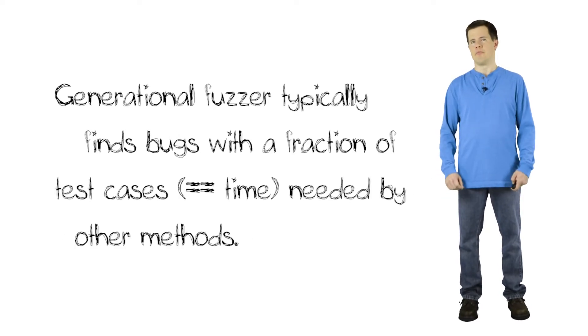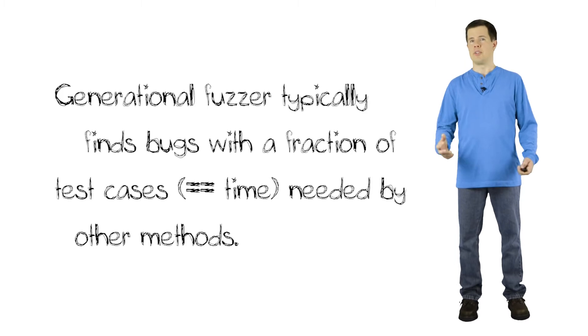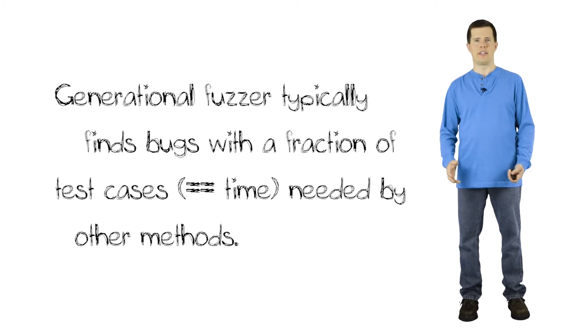So graphically, the fuzzer knows the protocol, so it can create a whole bunch of test cases for the first field in the first message, and the second field in the first message, and it can just iterate through the model of the protocol that it has, creating test cases for each field of each message, which allows it to get really good coverage on the target.